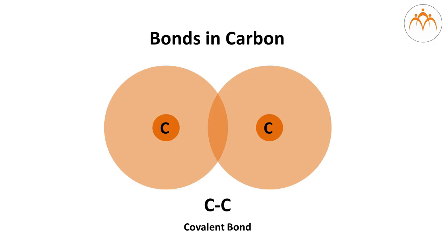What we call as a bond between two carbon atoms is a covalent bond. Next we are going to look at the covalent bond.